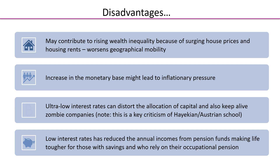Ultra low interest rates can distort the allocation of capital and also keep alive zombie companies. This is a key criticism of the Hayekian and Austrian school of thought — it encourages firms to continue to function even though under higher interest rate circumstances they would cease to exist. We call those companies zombie companies.